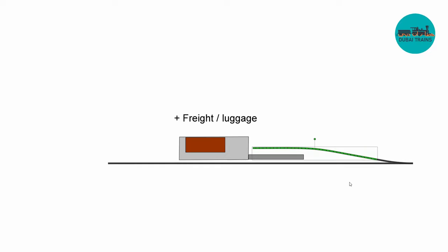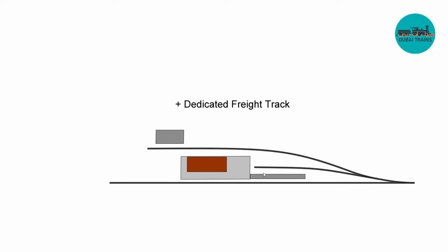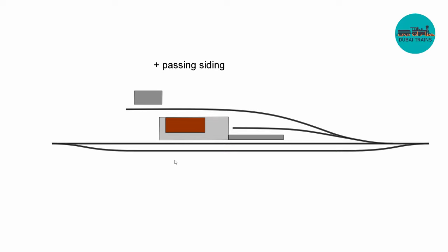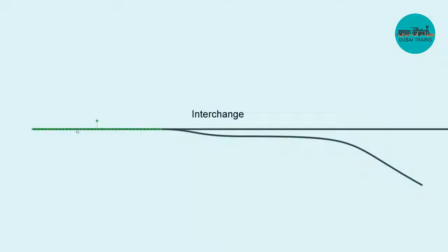Moving on, we can add a freight track to the station — perhaps also to spot a luggage car, since unpacking luggage takes time and the passenger train cannot wait. Then we have a dedicated freight track with a little freight depot on the main line. Once you have this, you'll probably want a passing siding so a passenger train can be unloading while another train takes the siding and runs around the waiting train.